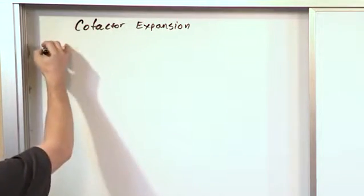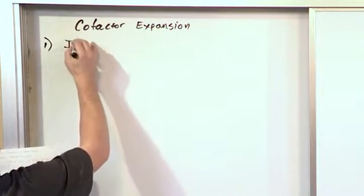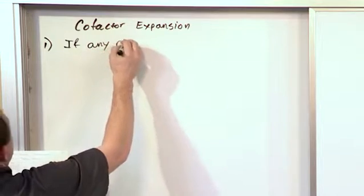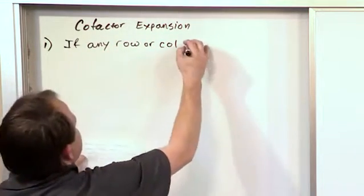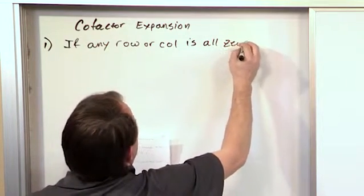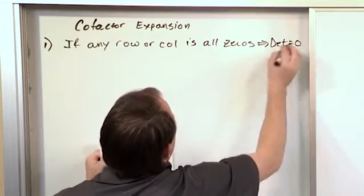All right, the first property I'm going to share with you is something that's pretty obvious, but maybe not the first time you think about it. If any row or column of a matrix is all zeros, then the determinant is also equal to zero.